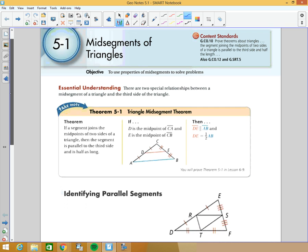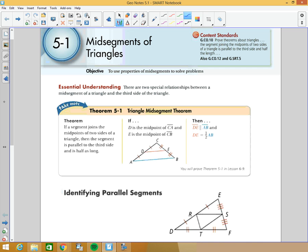If we look at the triangle midsegment theorem, it states that if D is the midpoint of CA and E is the midpoint of CB, then DE is parallel to AB and DE equals one-half AB.